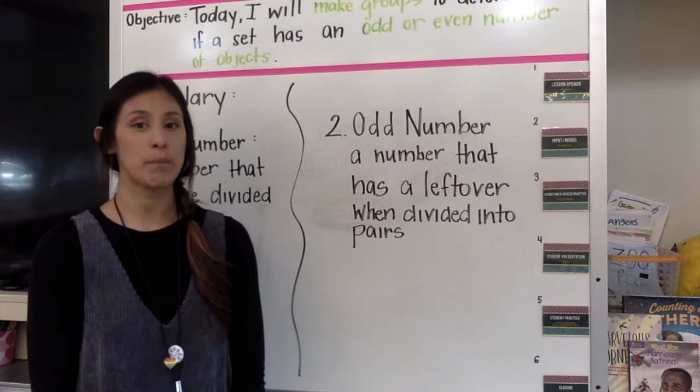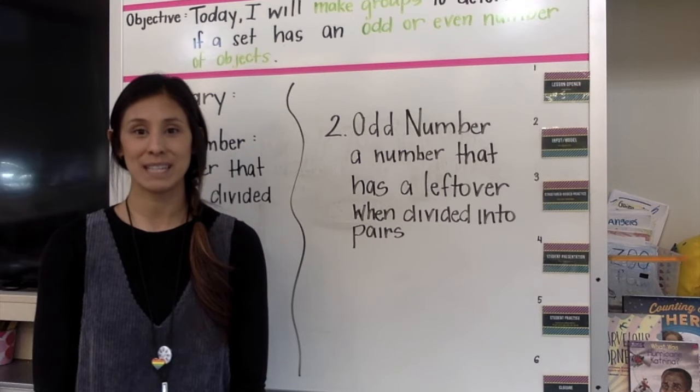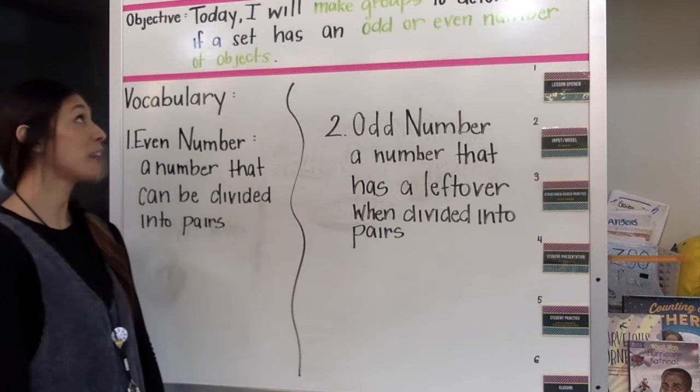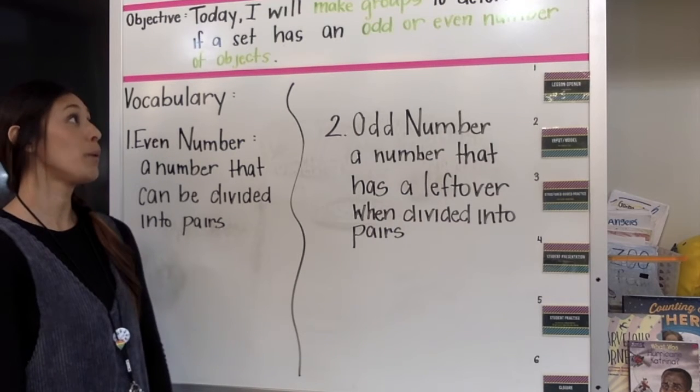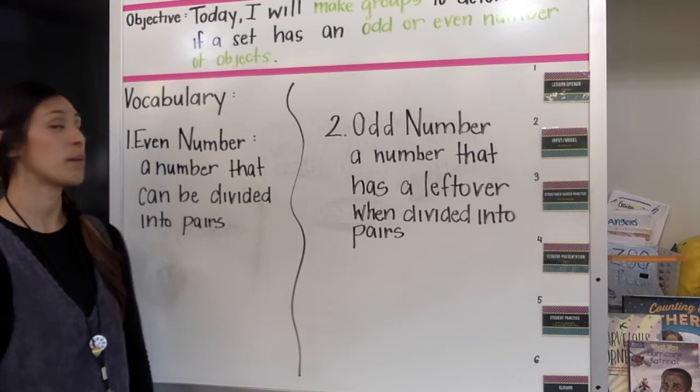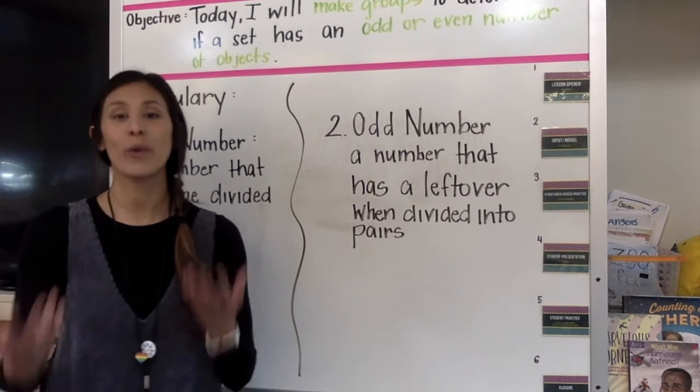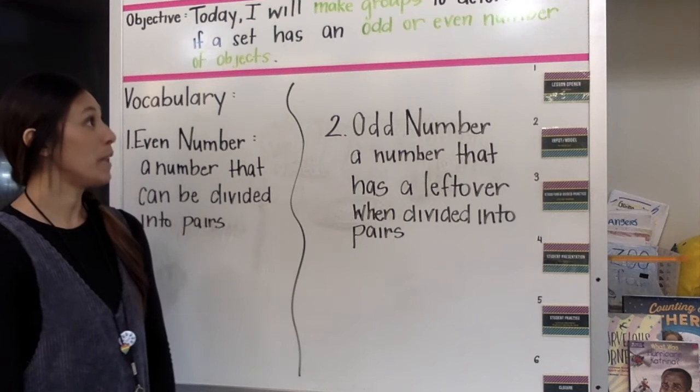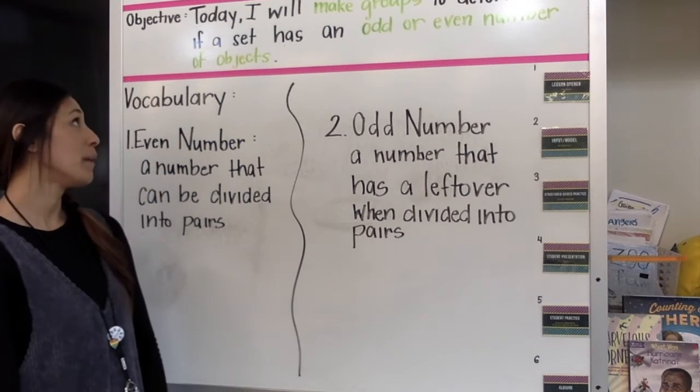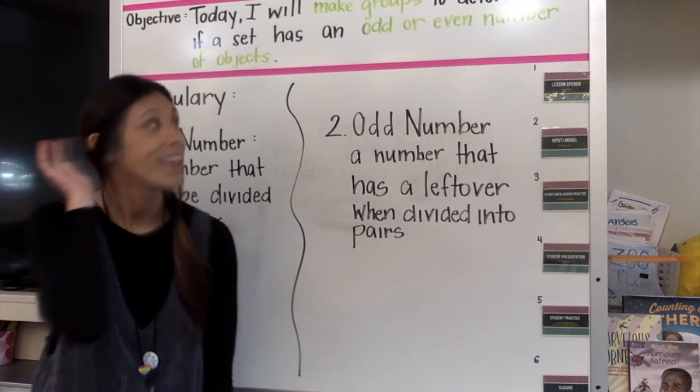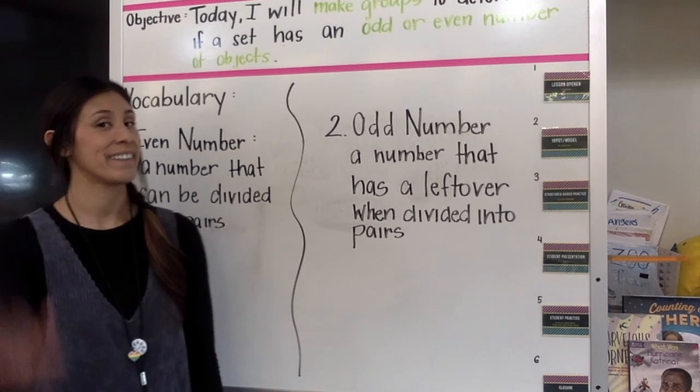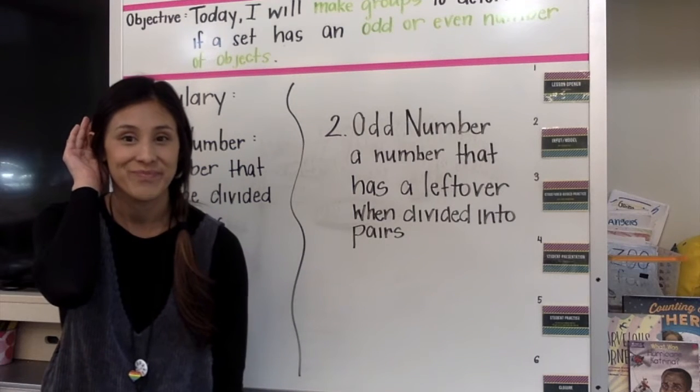So I'm going to start by reading the objective, and then I'm going to give you a chance to read it back to me. All right? Okay. Our objective says, today I will make groups to determine if a set has an odd or even number of objects. So your turn. Today we'll make groups to determine if a set has an odd or even number of objects. Great.